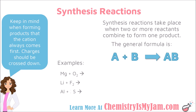The first type of chemical reaction is a synthesis reaction, which is sometimes called a combination reaction. A synthesis reaction takes place when two or more reactants come together to form just one product. A quick way to recognize a synthesis reaction is that there is no plus sign on the right-hand side of the reaction because there is only one product.